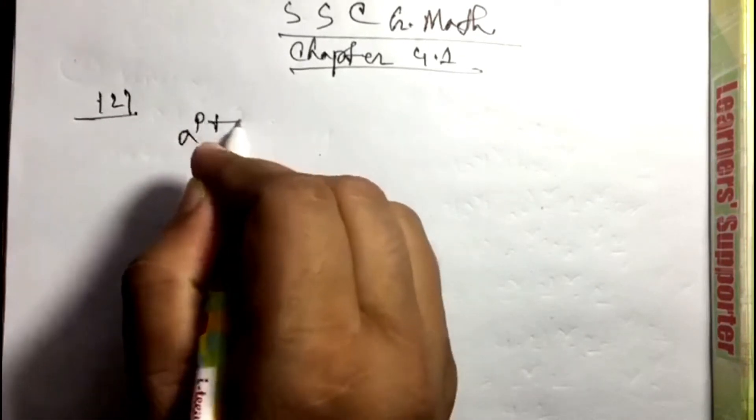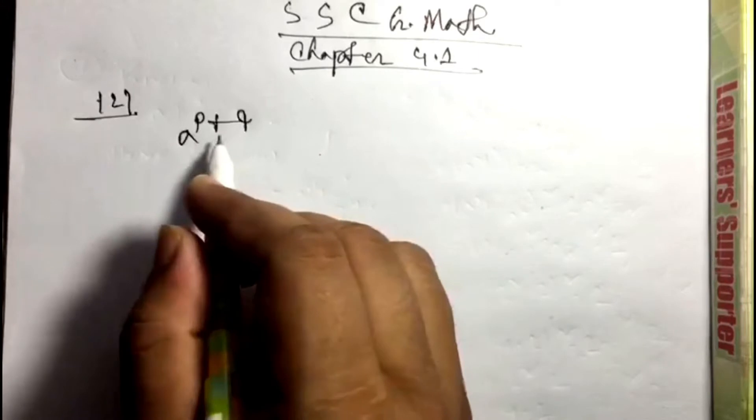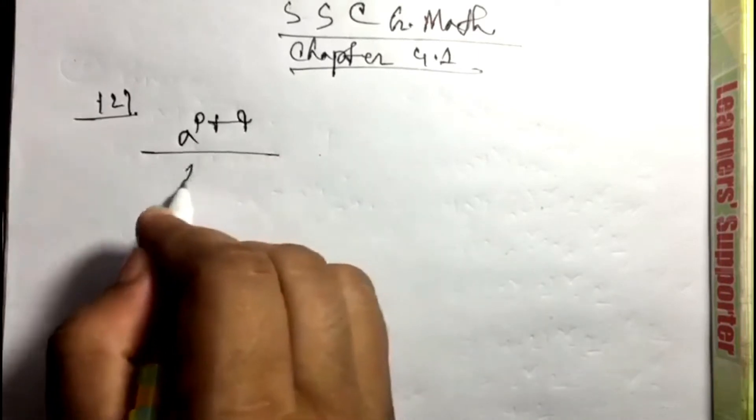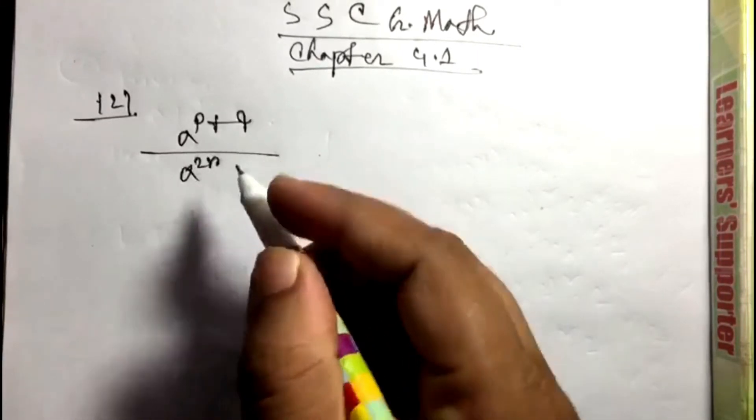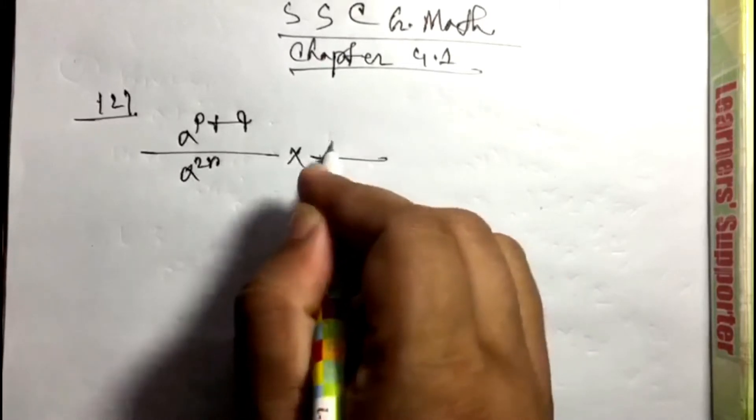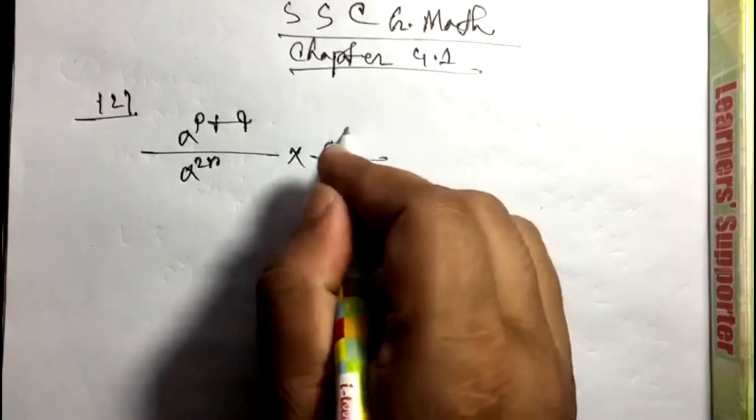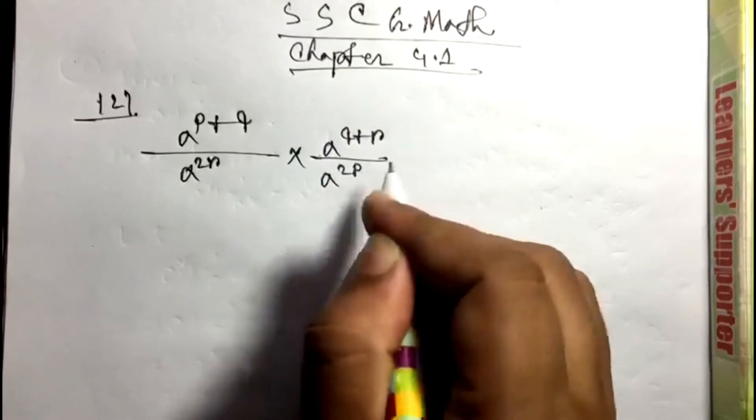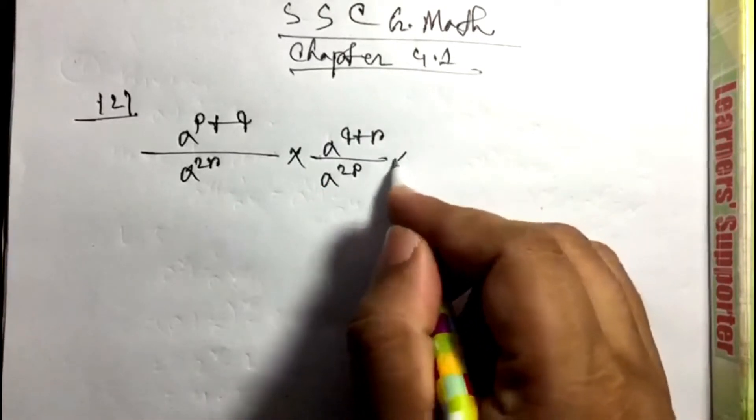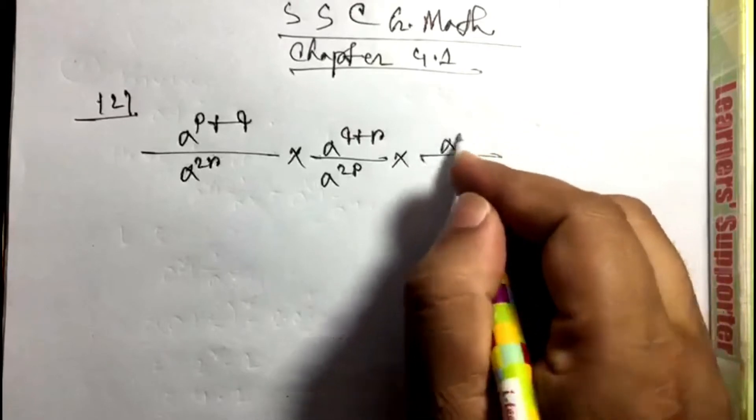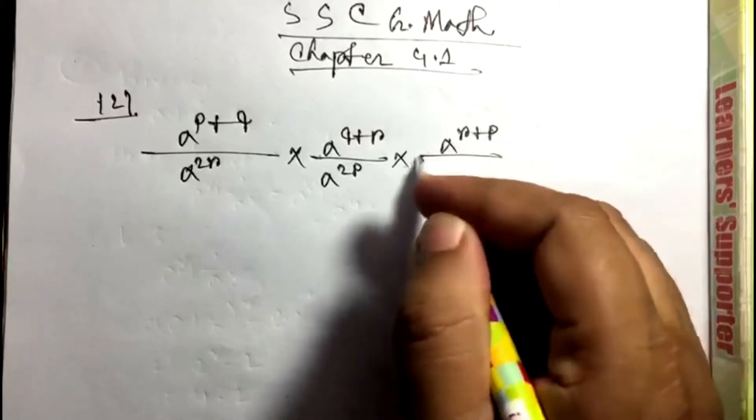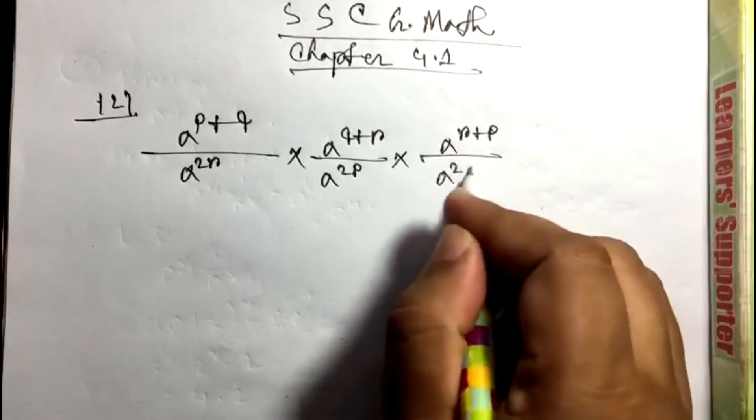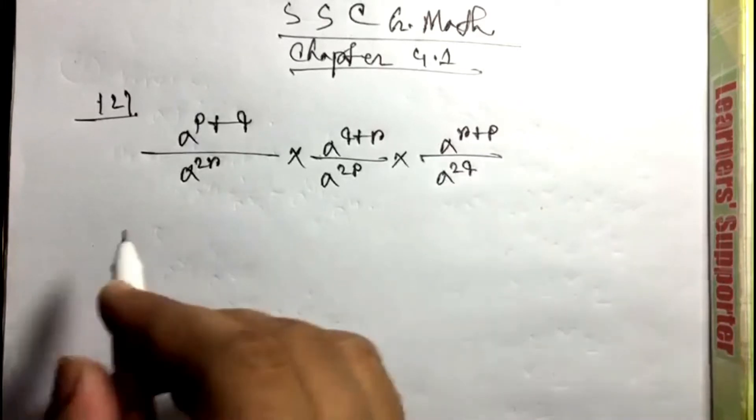a to the power p plus q divided by a to the 2r, times a to the power q plus r divided by a to the 2p, times a to the power r plus p divided by a to the 2q.